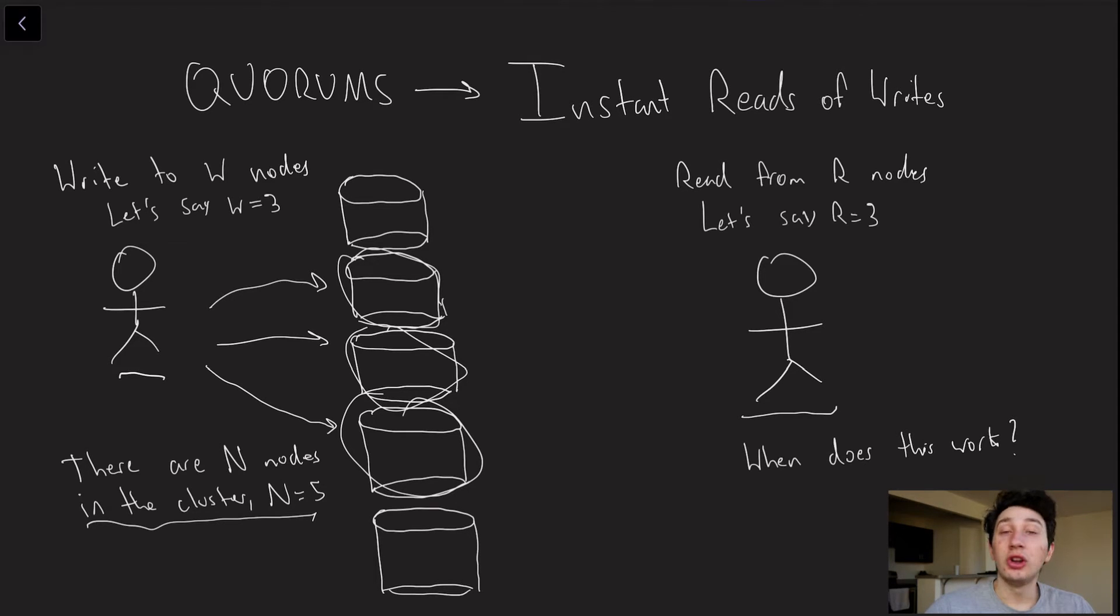Similarly, we've got another guy over here on the right side of the screen. He wants to read from R nodes. Let's say that R is equal to three. He's going to try to read from three different database nodes. Let's say he picks these two as the first, but they don't have the updated value. How is he going to see the guy on the left's updated value? Well, now he has to pick one more node, and all three nodes that he has to choose from have already been written to. So in this case, regardless of which one he picks, you know he's going to be reading from at least one node with the most updated value.